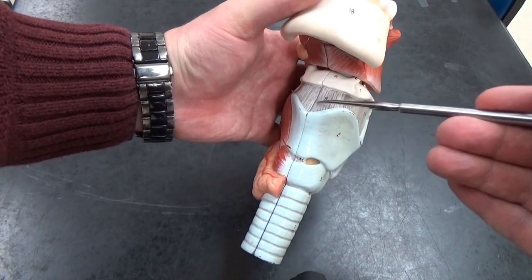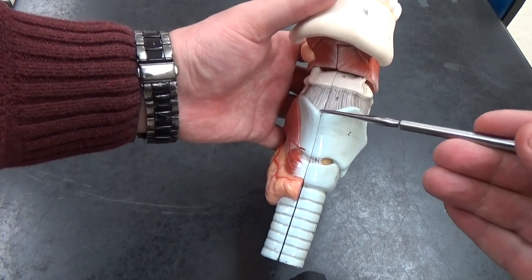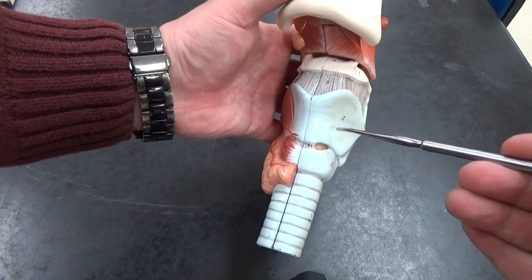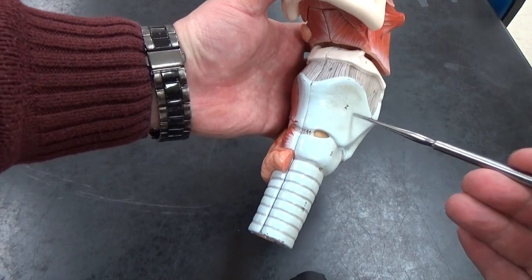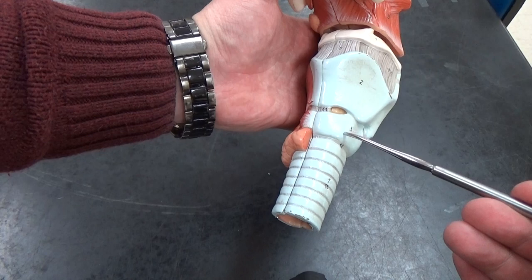It's this kind of rigid structure here. Laryngeal prominence is this point right here in the front. Thyroid cartilage, below that is the cricoid cartilage.